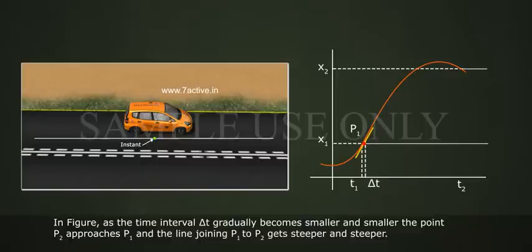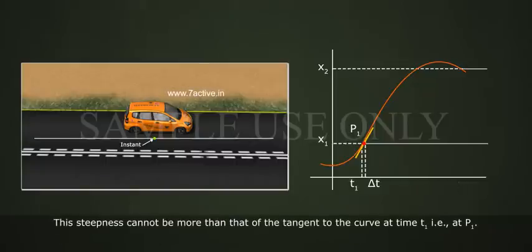and the line joining p1 to p2 gets steeper and steeper. This steepness cannot be more than that of the tangent to the curve at time t1, that is, at p1.